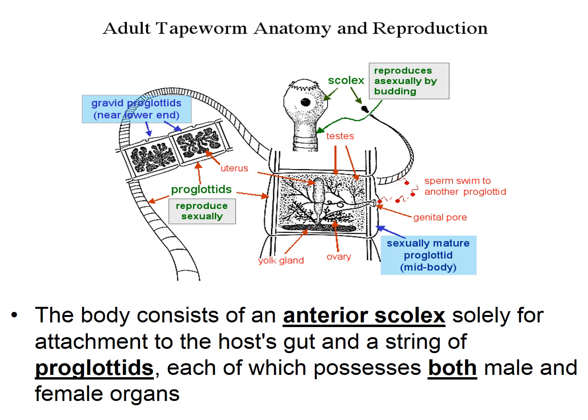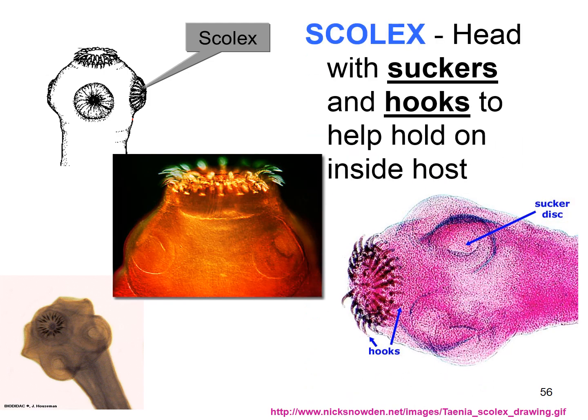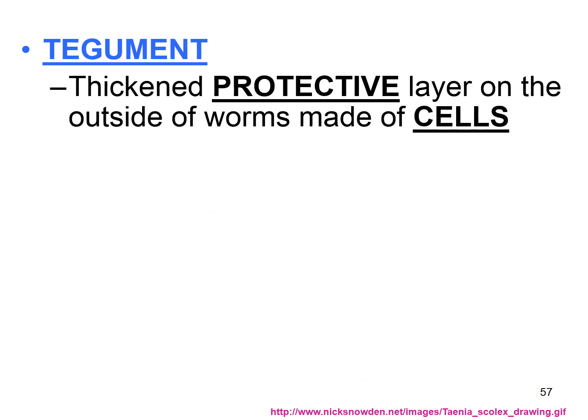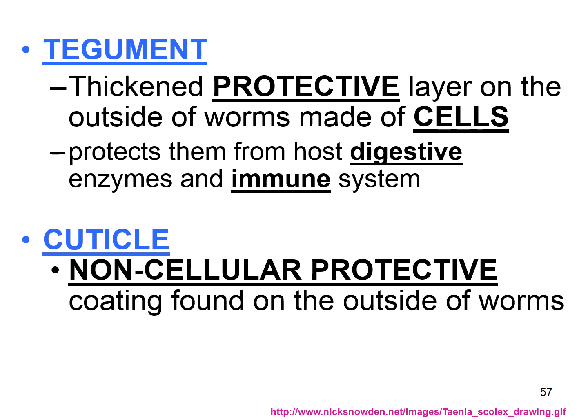A close image of the scolex shows some have little sucker discs to help them attach as well. Tapeworms have something called tegument — a thickened protective layer on the outside made of cells — that protects them from the host's digestive enzymes and prevents your immune system from killing them. They also have a thick cuticle, a non-cellular protective coating around the outside as well.